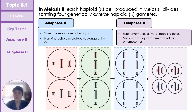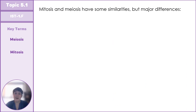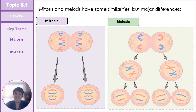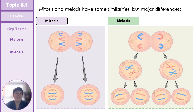As mentioned at the start, there are similarities between mitosis and meiosis but also very important differences. Mitosis involves just one round of division, separating sister chromatids from the start, and produces cells identical to the parent cell. Meiosis involves two rounds of division and produces genetically unique cells that have half the genetic information of the original parent cell.